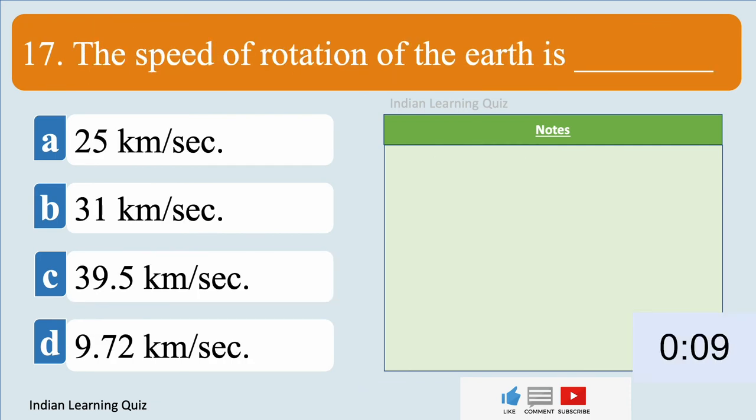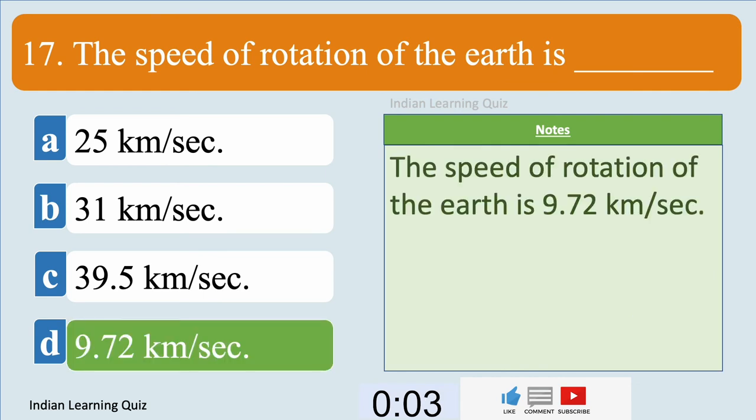The speed of rotation of the Earth is 9.72 kilometers per second.